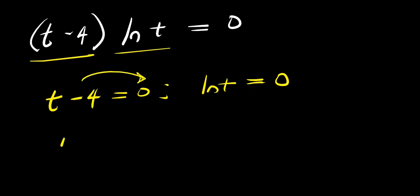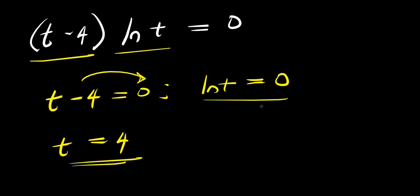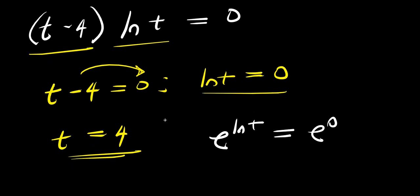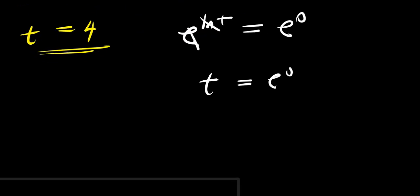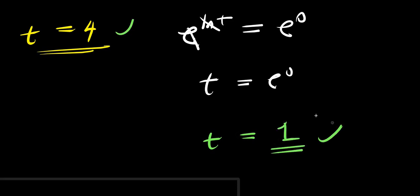From t minus 4 equals 0, we get t equals 4. For ln(t) equals 0, we raise e to both sides: e to the power of ln(t) equals e to the power of 0, so t equals e to the power of 0, which equals 1. We end up with the same two solutions: t equals 4 and t equals 1.